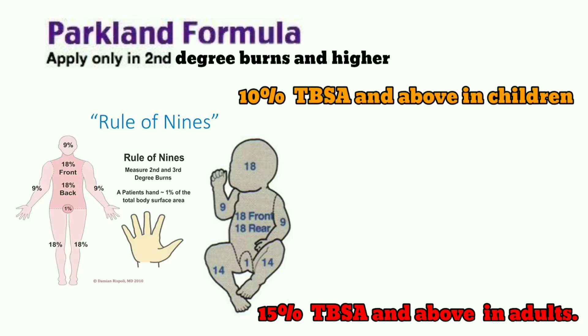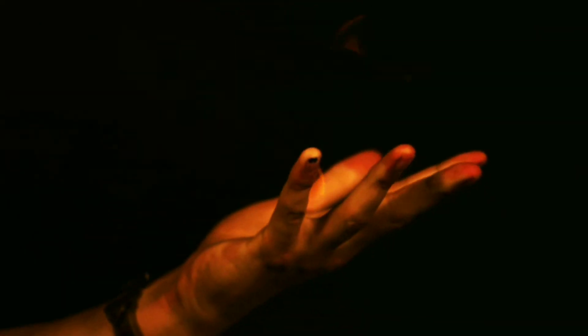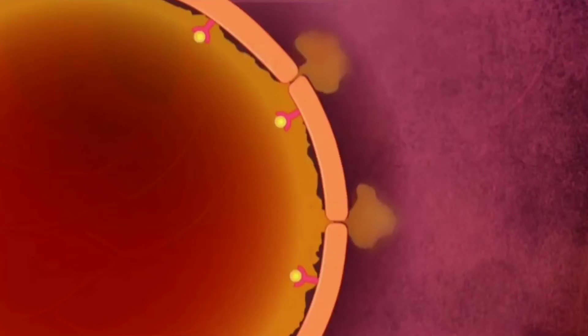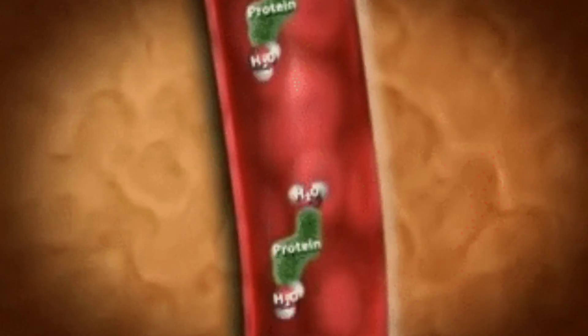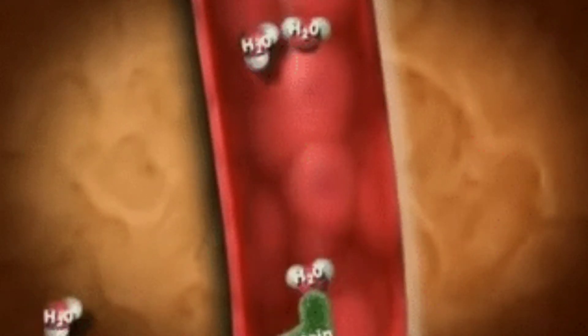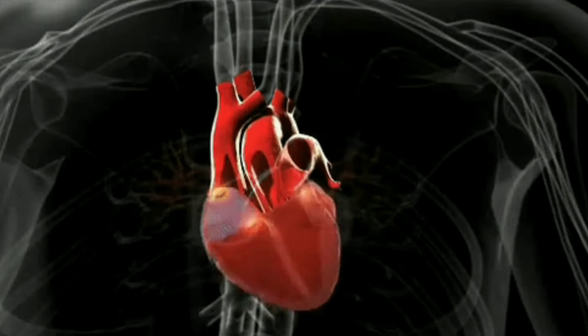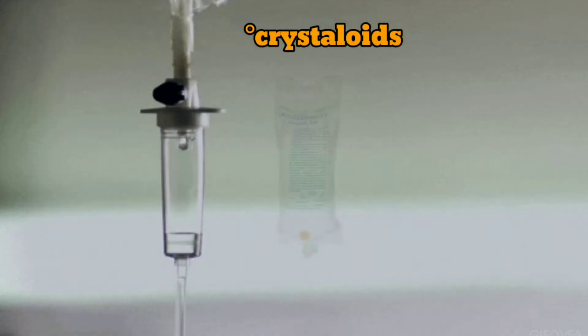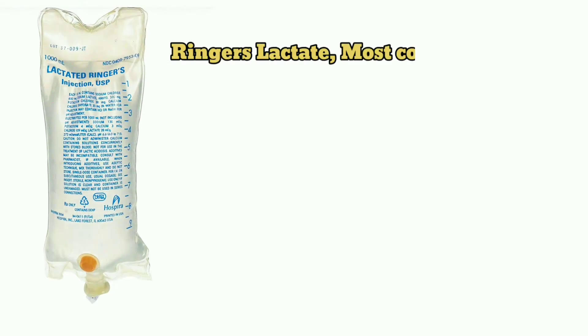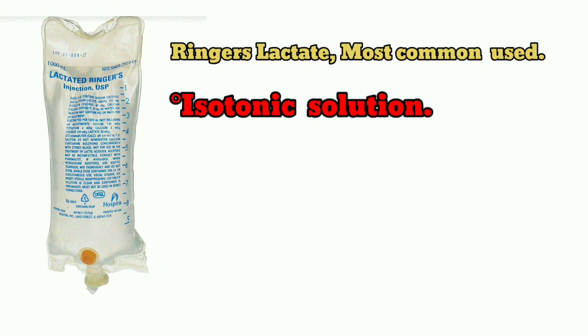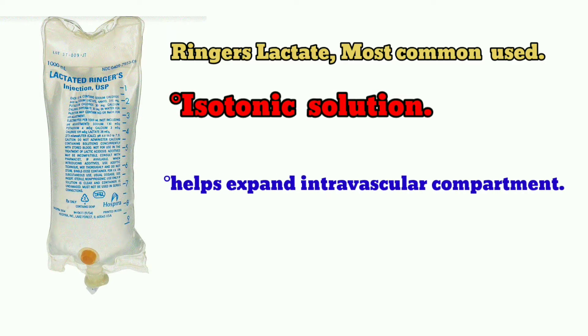When you sustain a burn, there is a change in capillary permeability — it increases. Instead of fluid staying in the intravascular system, it moves out into the interstitial system, depleting intravascular volume. The heart won't have enough fluid to pump, which can lead to hypovolemic shock. Steroids such as Ringer's lactate, Hartmann's solution, or normal saline may be used; Ringer's lactate is the most used, as it is an isotonic solution that helps expand the intravascular compartment.